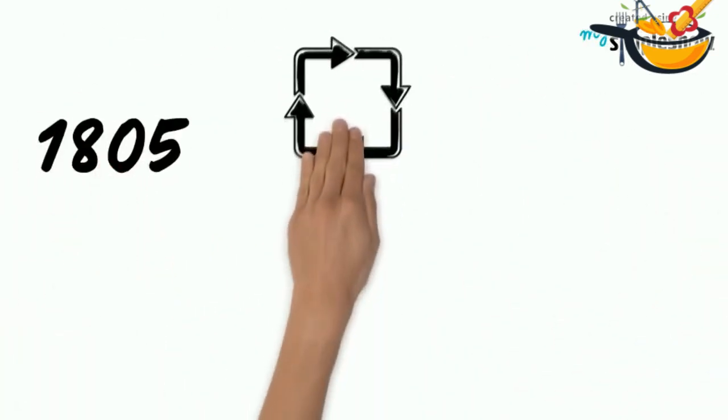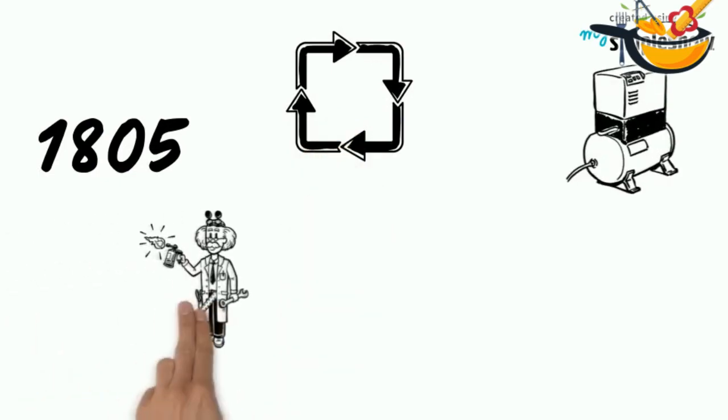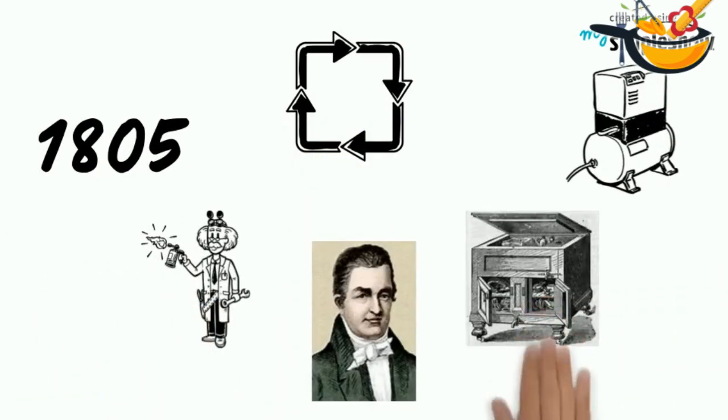In 1805, based on a closed cycle of compressed ether, the American inventor Oliver Evans continued Cullen's work. Still not practical.